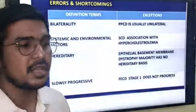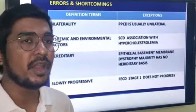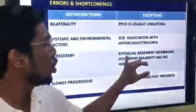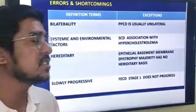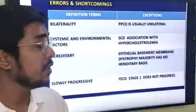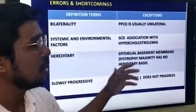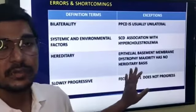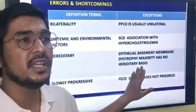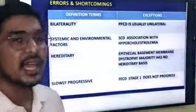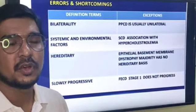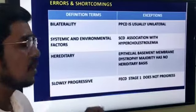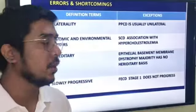Regarding hereditary basis — corneal dystrophy should pass from generation to generation. However, EBMD, Epithelial Basement Membrane Dystrophy, which is the most common corneal dystrophy and a type of epithelial dystrophy, in the majority of cases does not have a hereditary basis. So EBMD is an exception to the hereditary rule.